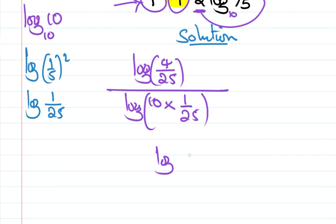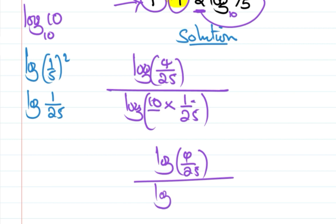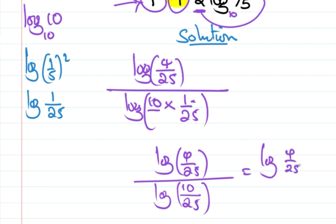The numerator gives us log of 4 base 25. Then the denominator — if you multiply, you get 10 and 1 as 10. The denominator gives us 25. You can simplify this further, giving us log of 4 over 25 in the numerator.